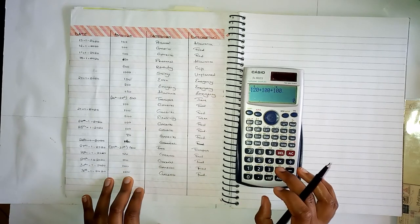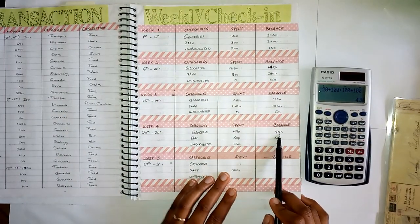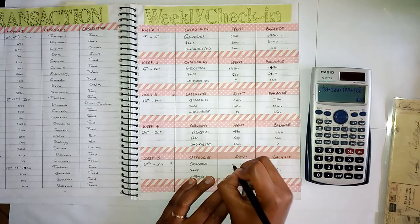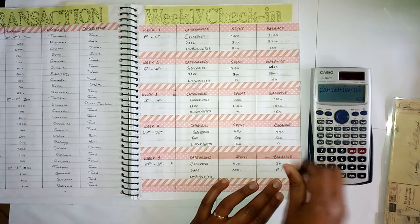Last week I had left over 440. Today I have spent 420, so I'm supposed to have a balance of 20 shillings. And according to my flashcard it's zero, but I have it here at the back.